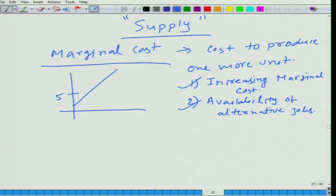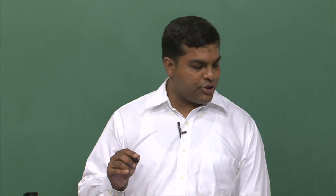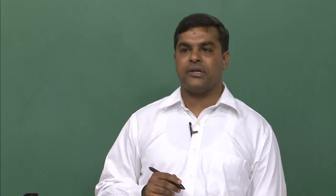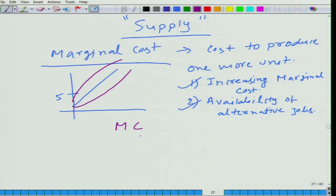I am drawing a straight line but the supply curve can take different shapes. What I mean to say is that the supply curve is always going to be an upward sloping curve, related to marginal cost. If MC (marginal cost) is less than p (price), you will sell that particular unit in the market and keep on selling until MC becomes equal to p.